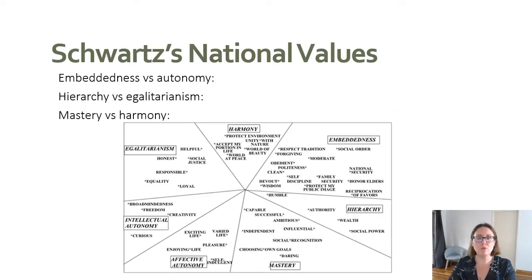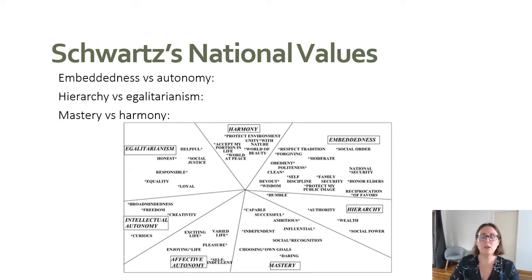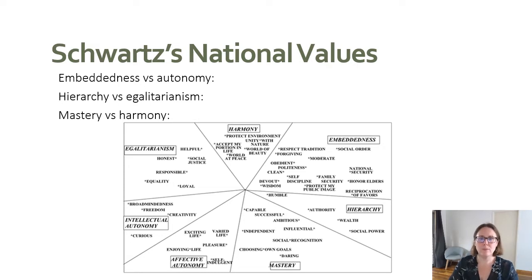Personal values and cultural values — collective and individual — become more important as we discuss the next value framework: Schwartz's national values. Schwartz's national values are measured and operationalized at both the cultural or national level as well as the individual level. Schwartz said that there are three major problems that society faces, and those three problems can be operationalized and understood in terms of dimensions of national values.